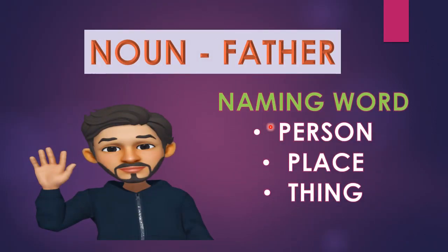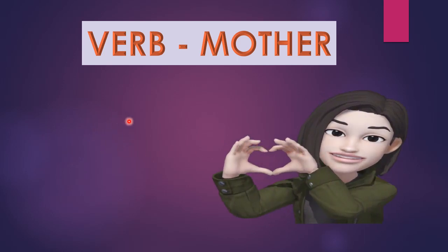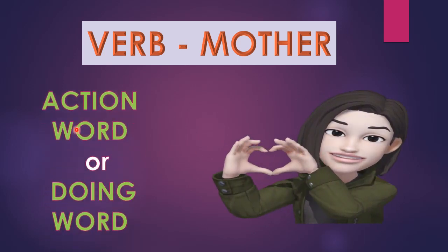Here comes our father. His name is Noun. What is a noun? A noun is a naming word. It can be the name of a person, place, thing, animal, bird, fruits, vegetables — anything. It can be the name of anything.